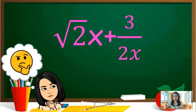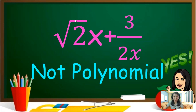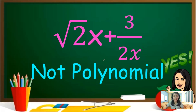Next, how about x squared times (x plus 3) over 2x? This is not polynomial. Why? Because we have a variable on the denominator. So it is considered not polynomial — it breaks the rules of polynomial.